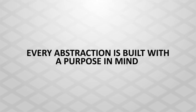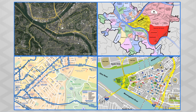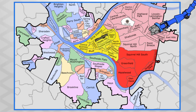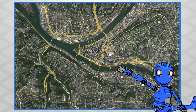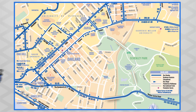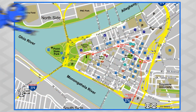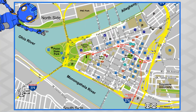Every abstraction is built with a purpose in mind. For example, here are four different maps — visual abstractions of a city. This map is useful for finding city neighborhoods. This map is useful for finding city streets. This one shows the public transportation of the city. And this one helps you find major attractions in the city.